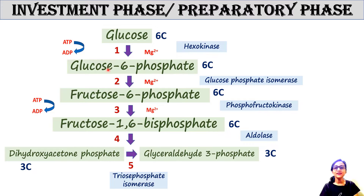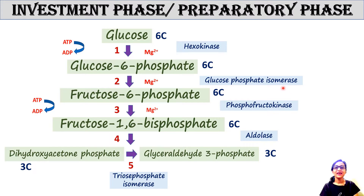Glucose-6-phosphate is then rearranged into fructose-6-phosphate by glucose phosphate isomerase. It is just a rearrangement reaction — glucose becomes fructose — hence the enzyme is an isomerase. Magnesium is again used as a cofactor.